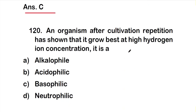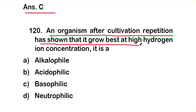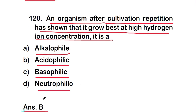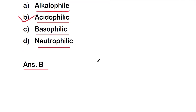Question number 120: An organism after cultivation has shown that it grows best at high hydrogen ion concentration. It is Option A: alkalophile, Option B: acidophile, Option C: basophile, or Option D: neutrophile. The right answer is Option B — acidophile. They are acidophilic; they love acidic conditions, meaning high hydrogen ion concentration.